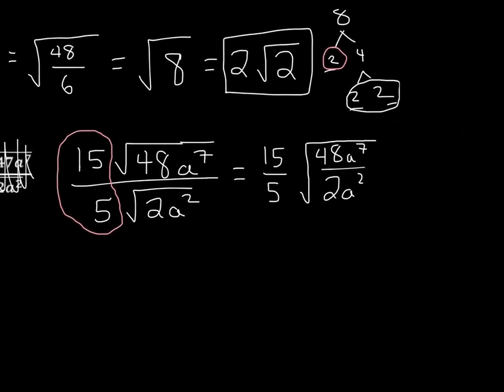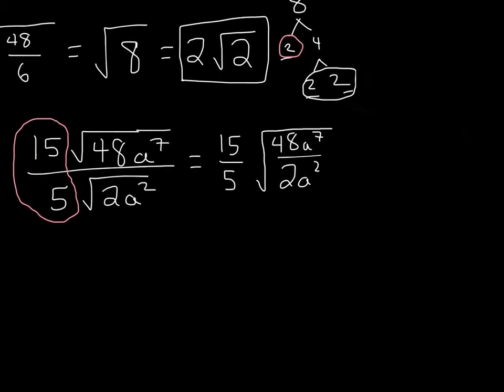All right. So, now what we're going to do here is take a look at the fraction. Can we simplify this fraction? Yeah. 15 over 5 is what? 15 over 5 is just going to give us 3. And then we're going to take a look inside this fraction and see if we can divide this at all. So, 48 divided by 2 is 24, right? So, 48 divided by 2 is 24. And then a to the 7th divided by a to the 2nd. Remember, we subtract those exponents. That's going to give us a to the 5th.